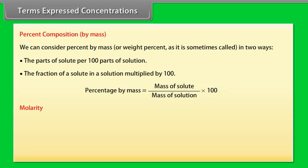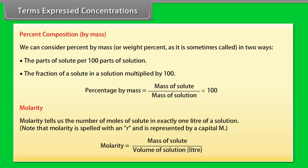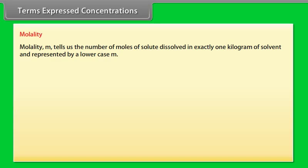Molarity tells us the number of moles of solute in exactly one liter of solution. Note that molarity is spelled with an 'r' and is represented by a capital M. Molarity = moles of solute / volume of solution in liters. Molality tells us the number of moles of solute dissolved in exactly one kilogram of solvent, represented by a lowercase m. Molality = moles of solute / mass of solvent in kilograms.